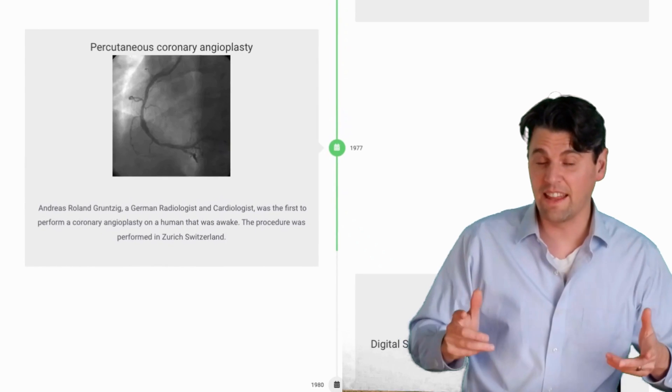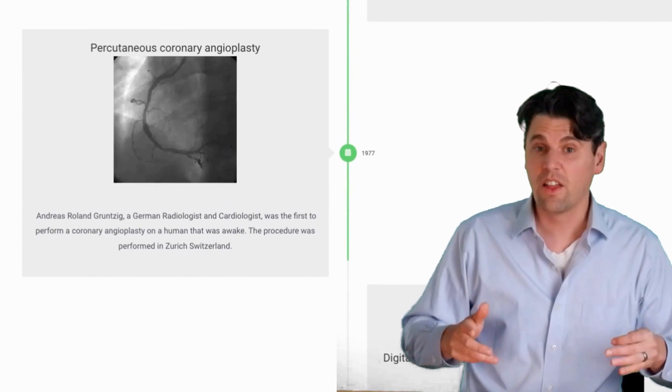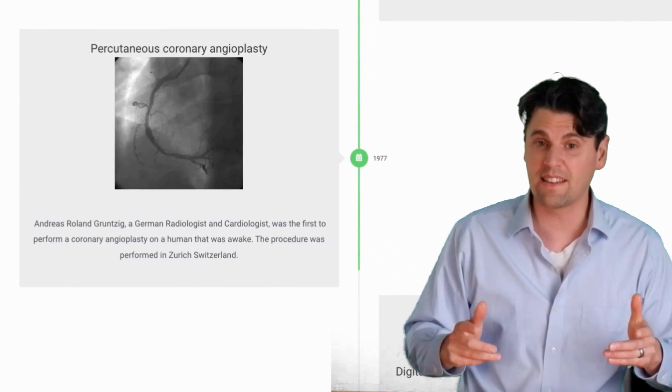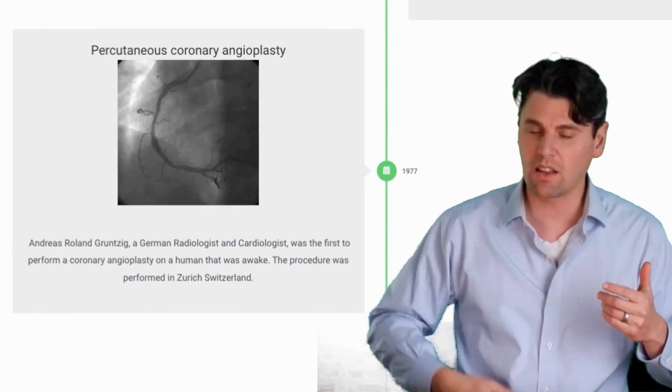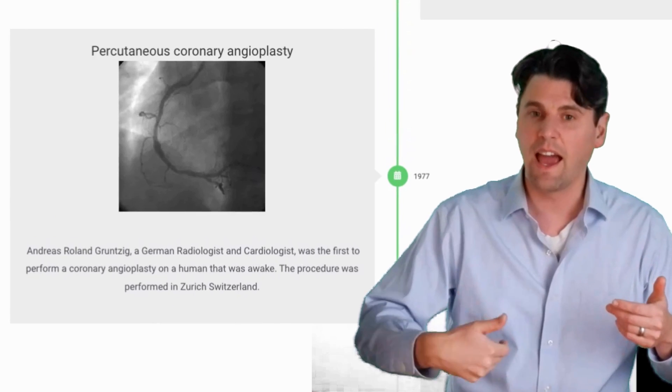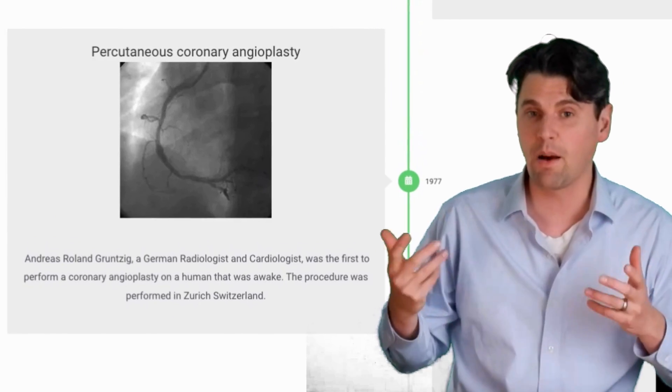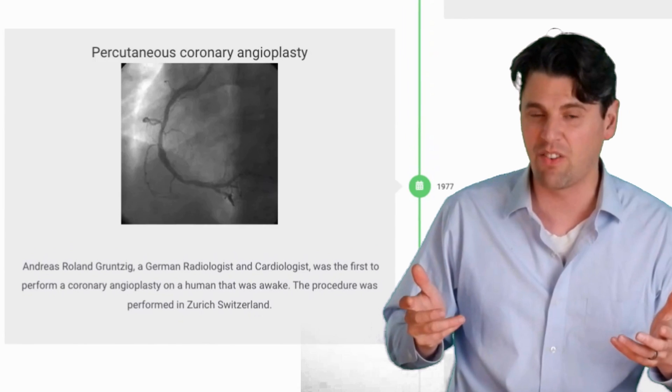In 1977, in Zurich, Switzerland, the first angioplasty in the heart was actually performed while the patient was awake. So again, like we talked about, percutaneously entering the body, breaking up a clot in the heart itself.